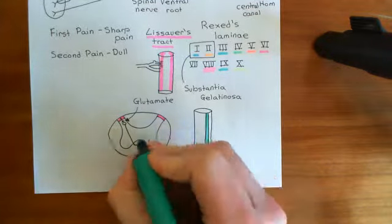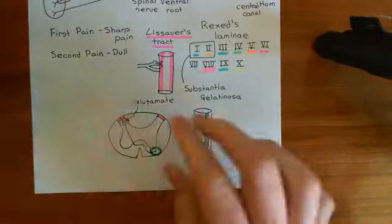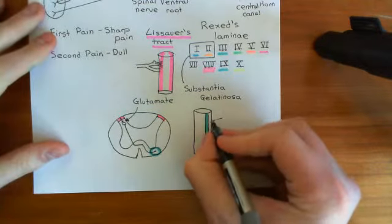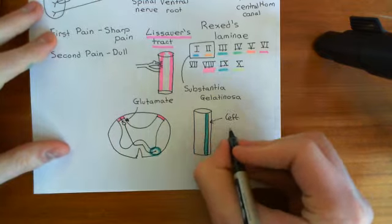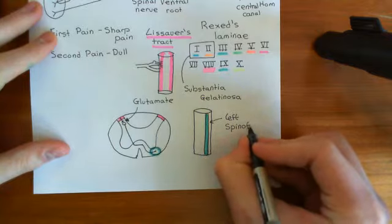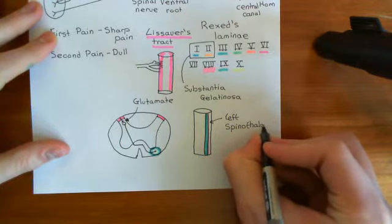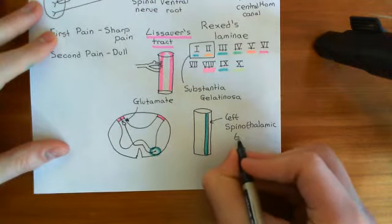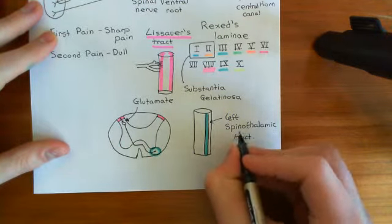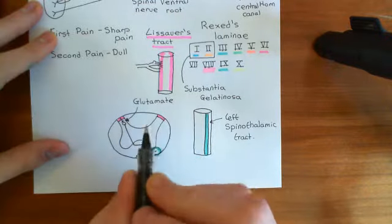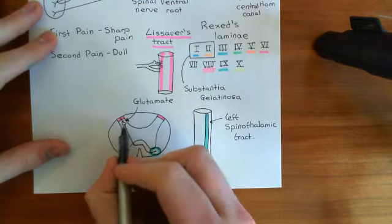All the different levels of the spinal cord will be contributing axons into this tract. Specifically, this one I'm drawing here is the left spinothalamic tract. The reason it's called that is it goes from the spine up to the thalamus. It's carrying the axons of these secondary neurons going up, and they're from the right-hand side.